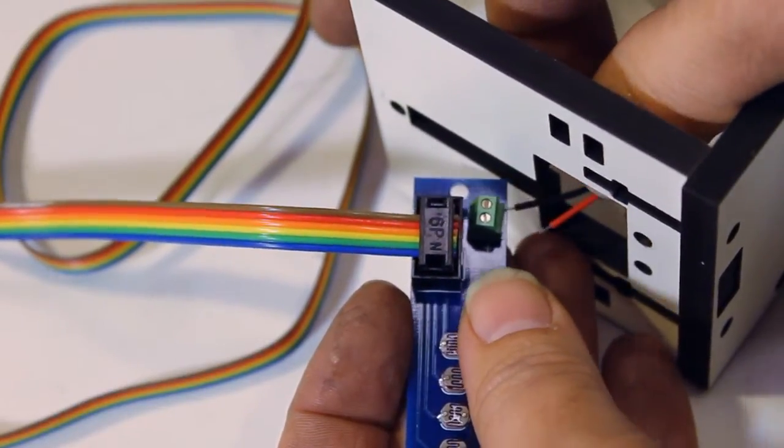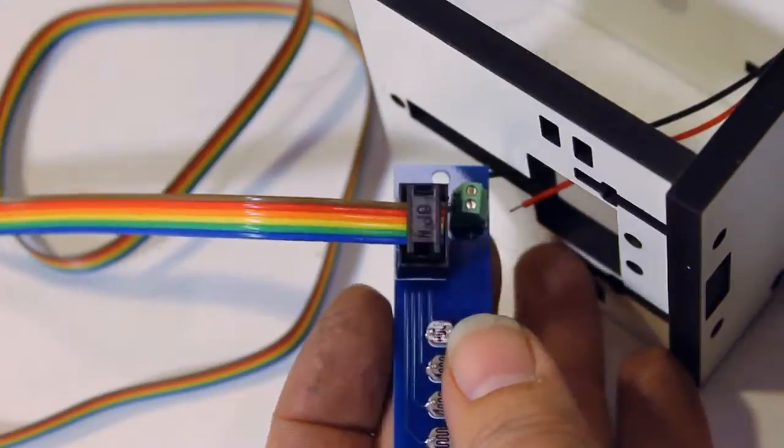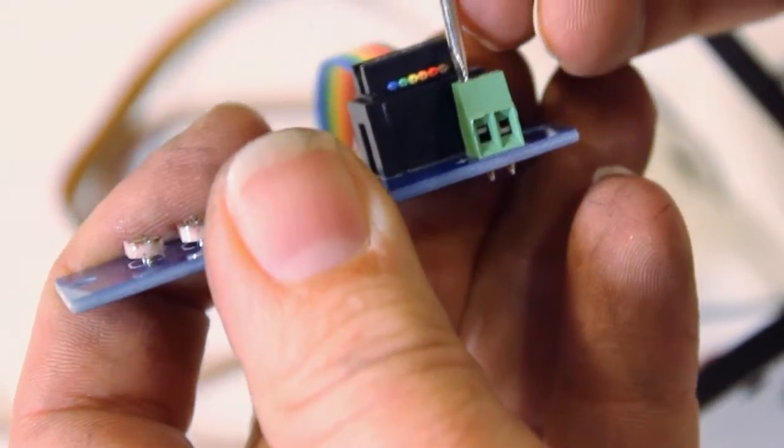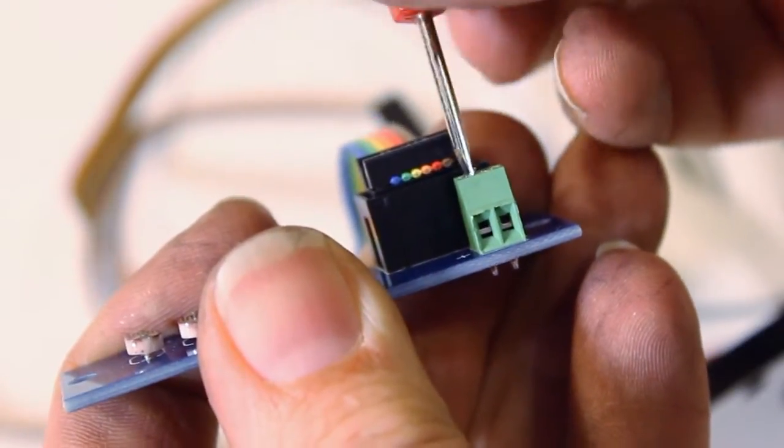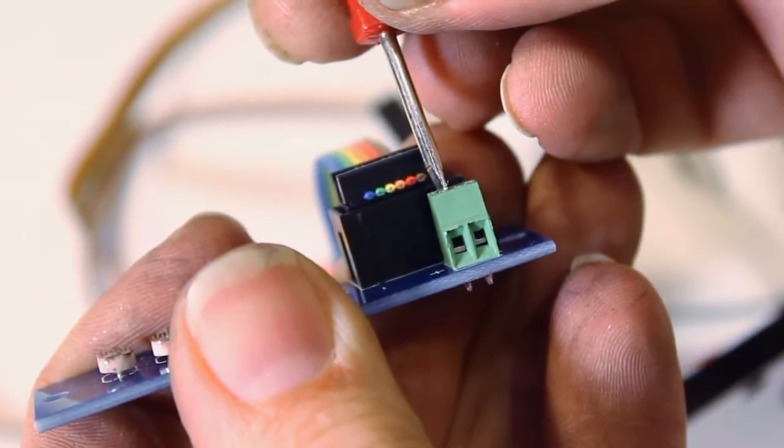Connect the red wire where it says positive. These terminals start out tightened all the way down, so you'll have to loosen them first before you'll be able to put the wires in.